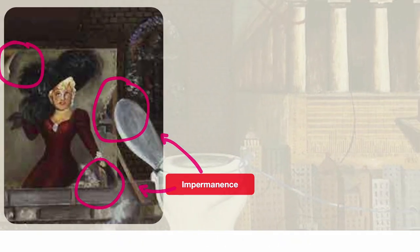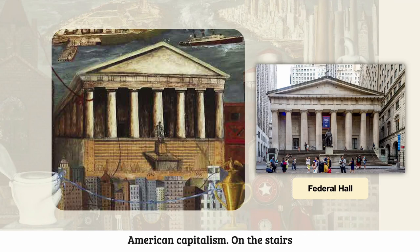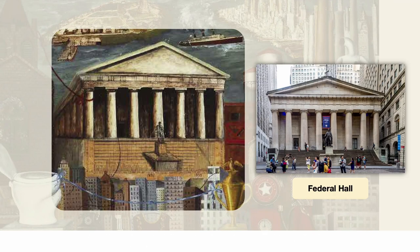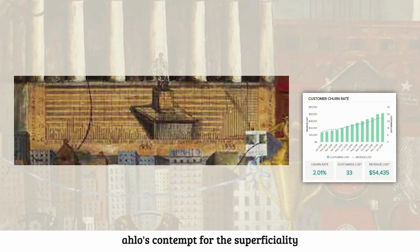In the center middle ground, we see Federal Hall, which is a symbol of Wall Street and the heart of American capitalism. On the stairs leading up to Federal Hall, we see a sales graph, which further emphasizes Kahlo's contempt for the superficiality of American capitalism.